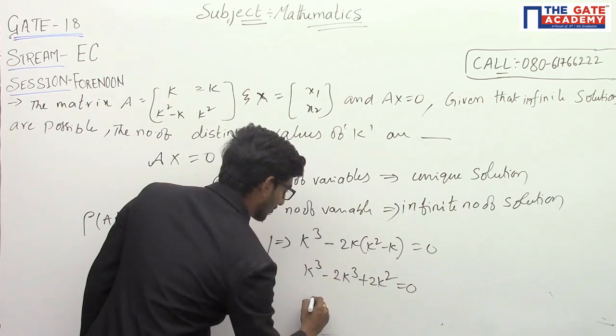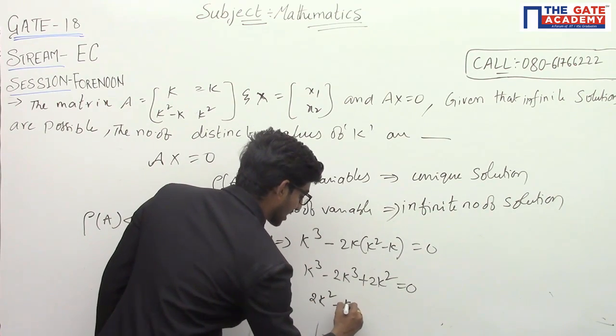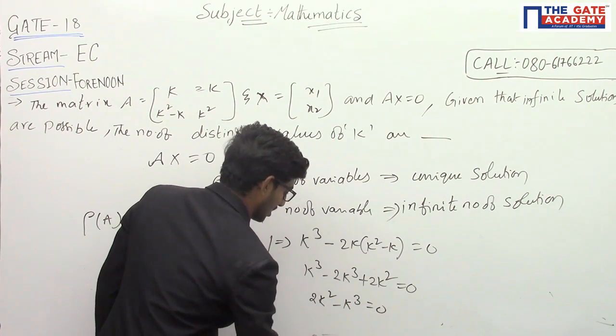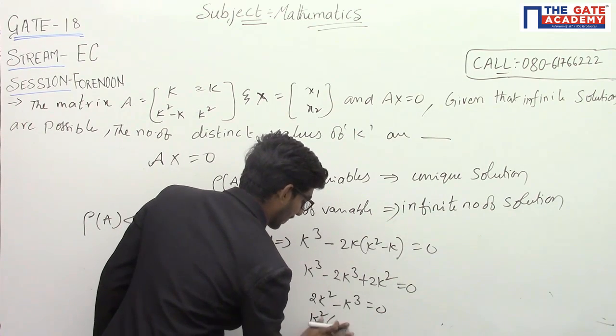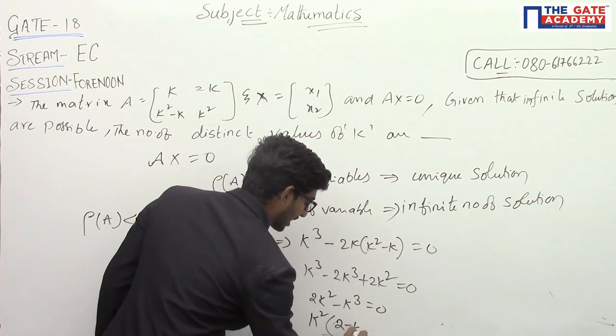Now, what we are getting? 2k square minus k cube equal to 0. If you take k square, 2 minus k equal to 0.